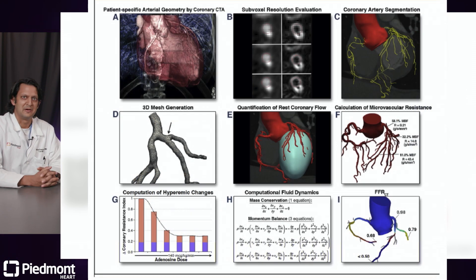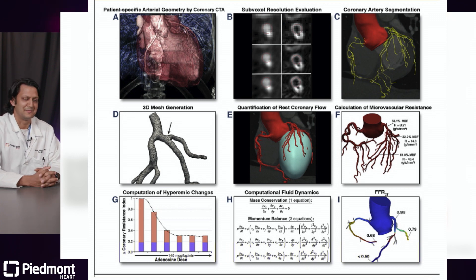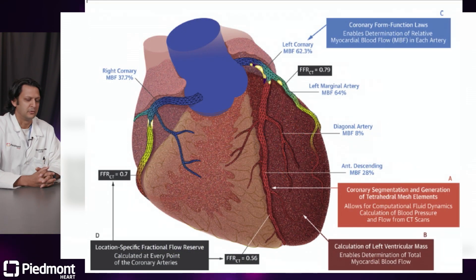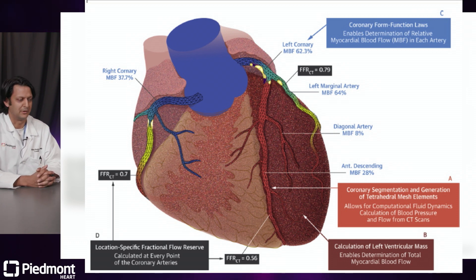Very analogously, for CT we use computational fluid dynamics and mathematical algorithms that estimate the pressure across a particular lesion. We develop these mathematical models to show whether the pressure drop across a lesion is significant, using the same numbers — less than 0.8 is considered significant for CT-FFR as well. No additional imaging is necessary, as long as you have good quality CT imaging.